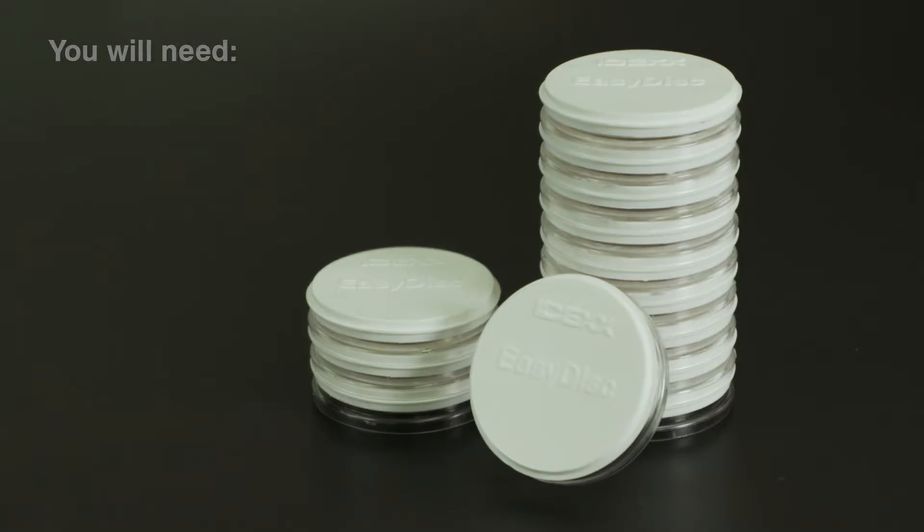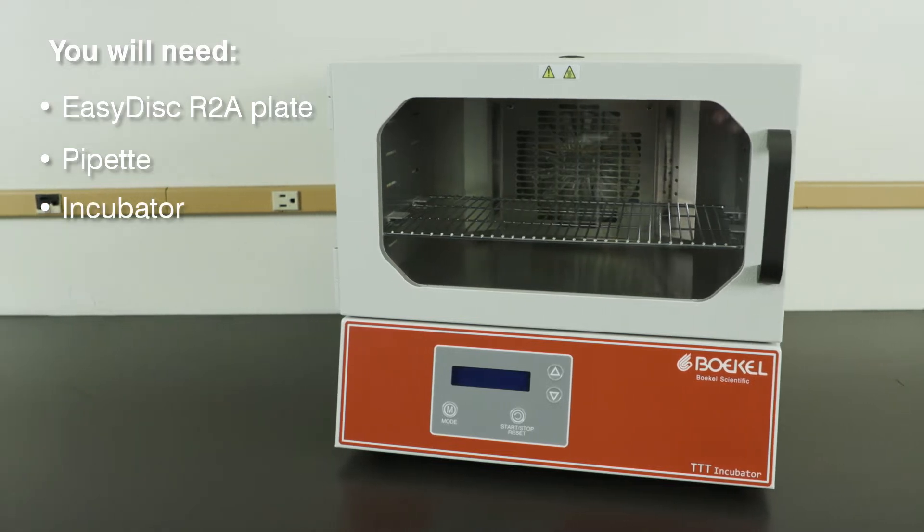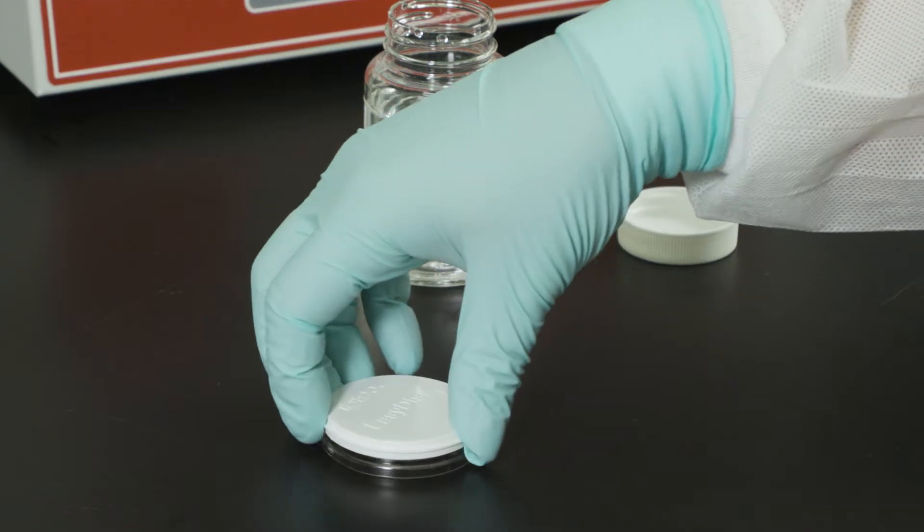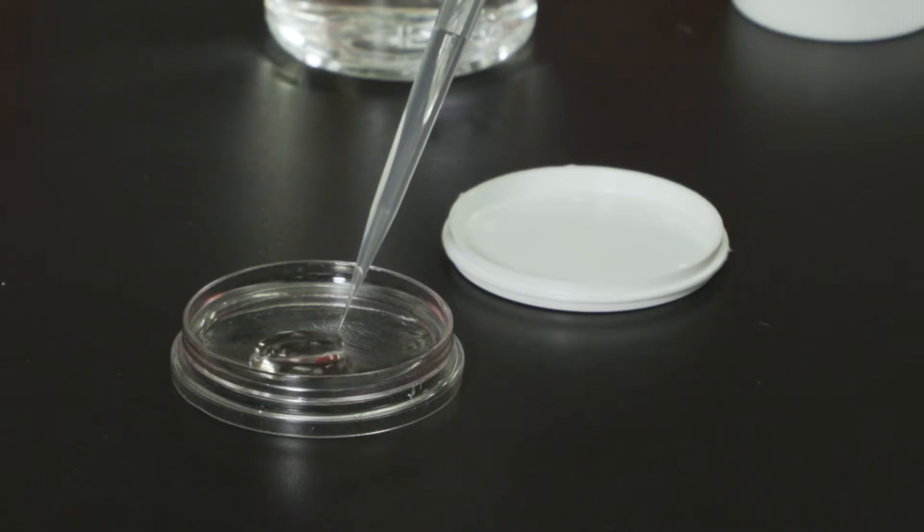For this demonstration, you will need an EasyDisc R2A plate, a pipette, and a temperature-controlled incubator. Remove the lid and add 1 mL of water sample directly to the EasyDisc R2A plate.